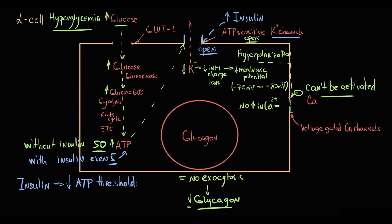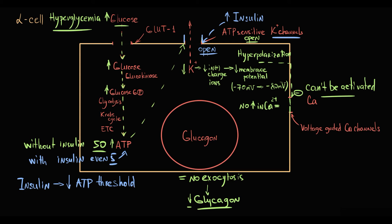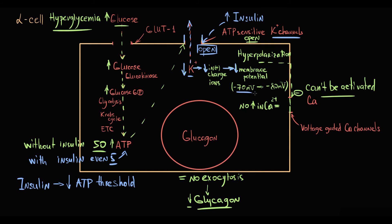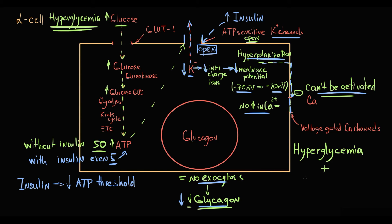In the activated state, potassium channels open and potassium flows out of the cell by concentration gradient. With decreasing intracellular positively charged ions, membrane potential goes down — for example, from minus 70 to minus 80 mV. The cell hyperpolarizes, and in a hyperpolarized state, calcium channels cannot be activated, thereby glucagon cannot be secreted. So hyperglycemia, which causes high intracellular ATP level, together with the insulin effect, opens potassium channels and by this inhibits glucagon release.